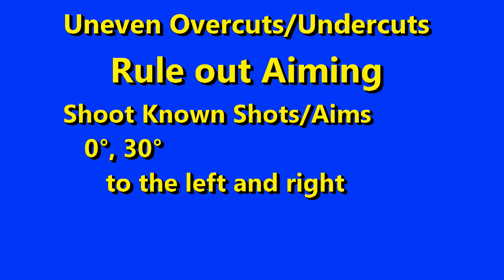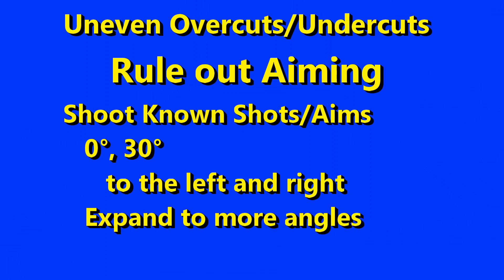An easy way to do this is to shoot known shots with no english and to also do this at different shot speeds. Start with just shooting straight-in shots and the 30-degree cut, both to the left and to the right. Each has an exact known aim — center ball or the outside edge. Then expand to other angles, especially to thin cuts where many perceptual and stroke flaws manifest.